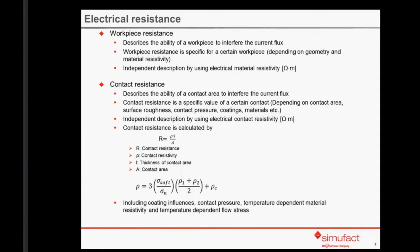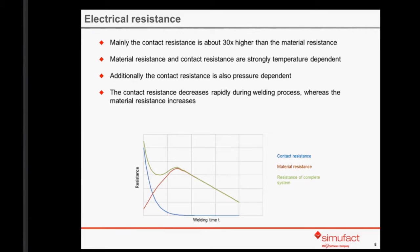In general, the contact resistance is about 30 times higher than the material resistance. Both resistances are strongly dependent on temperature. Additionally, the contact resistance is also pressure dependent, as shown in the diagram. The blue line describes the contact resistance during the process. After cooling, the contact resistance does not increase again because the spot is now welded and both sheets are joined to one body — there is no contact anymore after welding. During heating, the electrical resistance increases until we turn off the electrical current at the peak point.